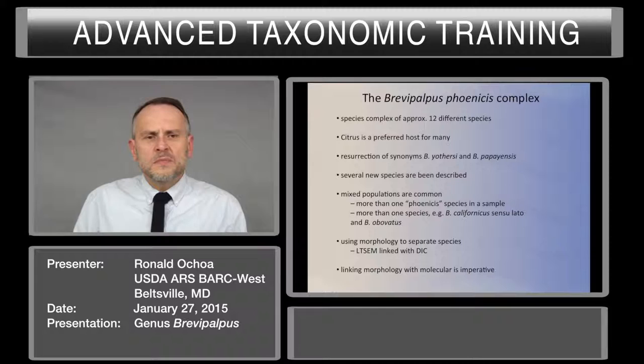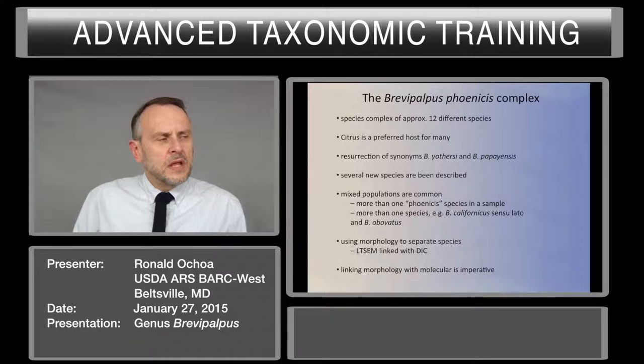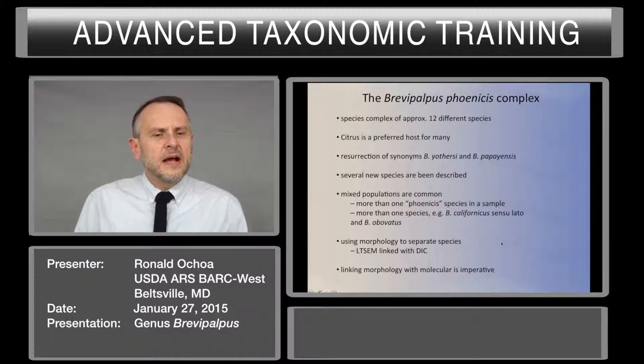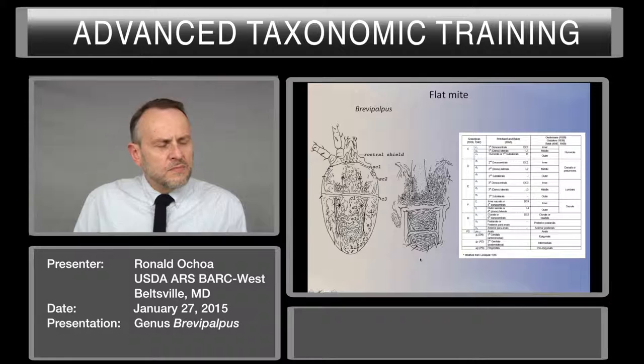The Brevipalpus phoenicis is a complex. There are approximately 12 different species involved in this. Citrus is definitely the preferred host of many of them. And there are two species that were synonymized in the past that definitely are valid species: Brevipalpus yoderi and Brevipalpus papayensis. Usually when we are collecting Brevipalpus, we can collect in a host plant that can have mixed populations.